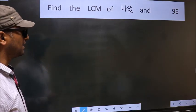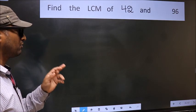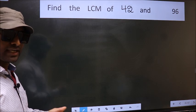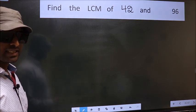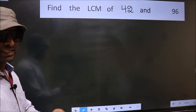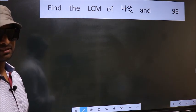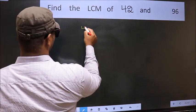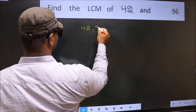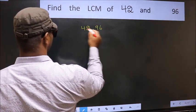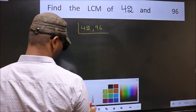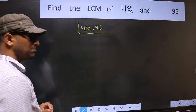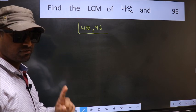Find the LCM of 42 and 96. To find the LCM, first we should frame it in this way: 42, 96. This is your step 1.